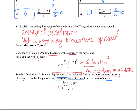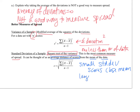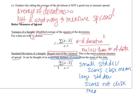If our standard deviation is small, then on average the scores are close to the mean, which means the mean is a good measure of center. If you have a large standard deviation, then the scores are not close to the mean — they are very spread out. And if our data is very spread out, then the mean may not be a good measure of center; it's not really telling us the true middle of our data.